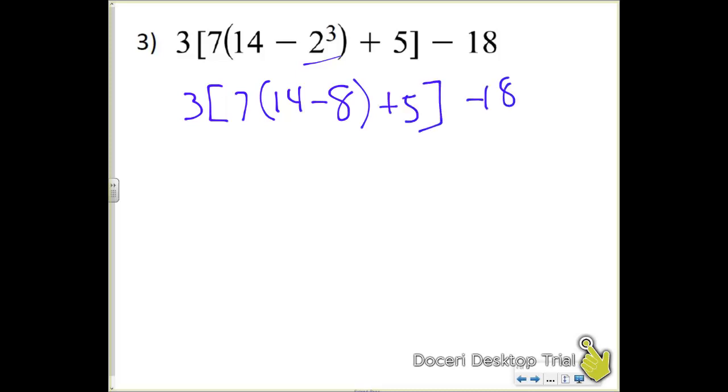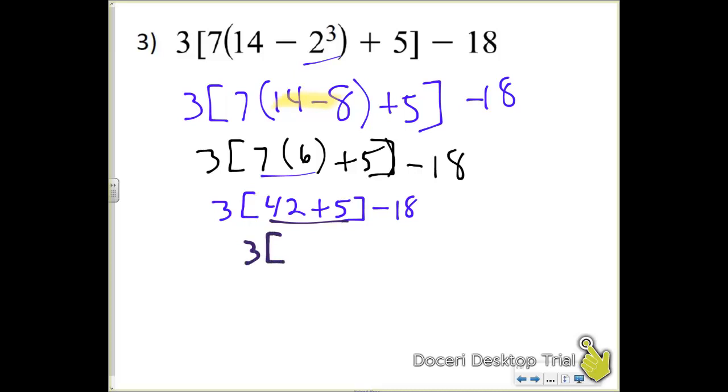Bring down the rest of the problem. Now I have to go and combine my 14 and my 8. And 14 minus 8 is going to leave me with a 6. And now the next thing I've got to do is times here. So I have 3. And then 42 plus 5 minus 18. Then we're going to combine those together. So I have 3 times 47 minus 18. Then I want to multiply the 3 and the 47. And that will give me 141 minus 18. And then the last step is subtract here. We have 123 ends up being our final solution.